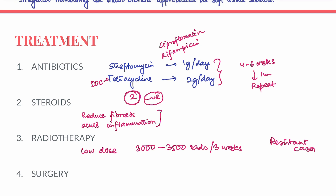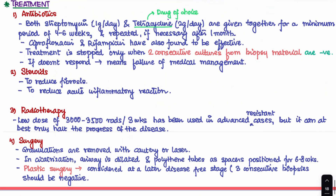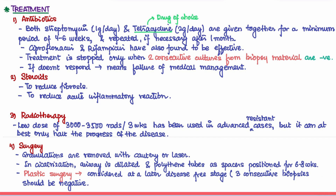Surgically, granulation tissue in the nose can be removed with cautery or laser. If the patient has progressed to the fourth stage with fibrosis and stricture, the airway can be dilated and polythene tubes placed as spacers to improve the airway. Plastic surgery is considered at a very late stage only after the disease has been confirmed resolved — that is, when three consecutive biopsies are negative.